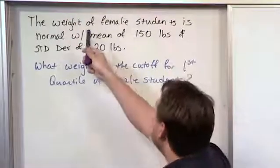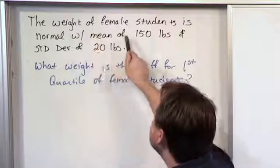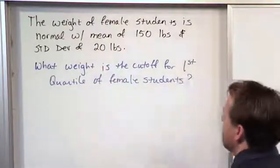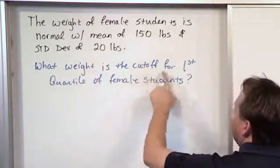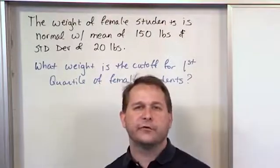So here we are told that the weight of female students is normally distributed with a mean of 150 pounds and a standard deviation of 20 pounds about the mean. So that describes our population. What weight is the cutoff of the first quartile of female students?